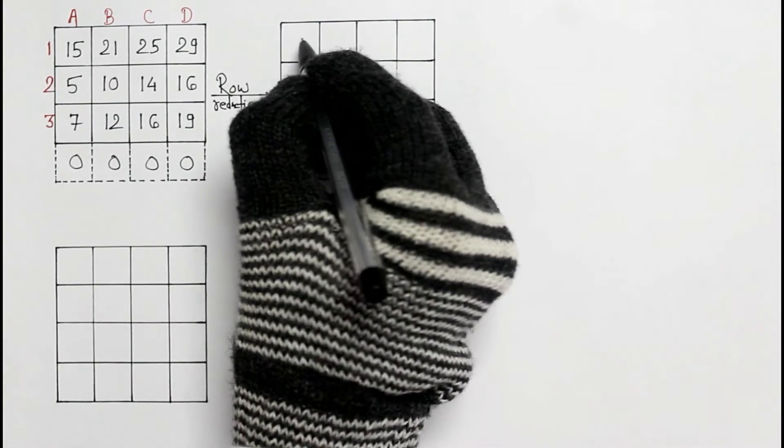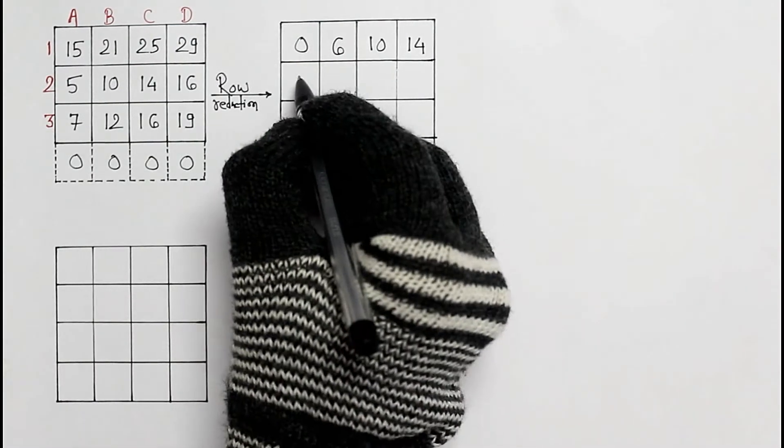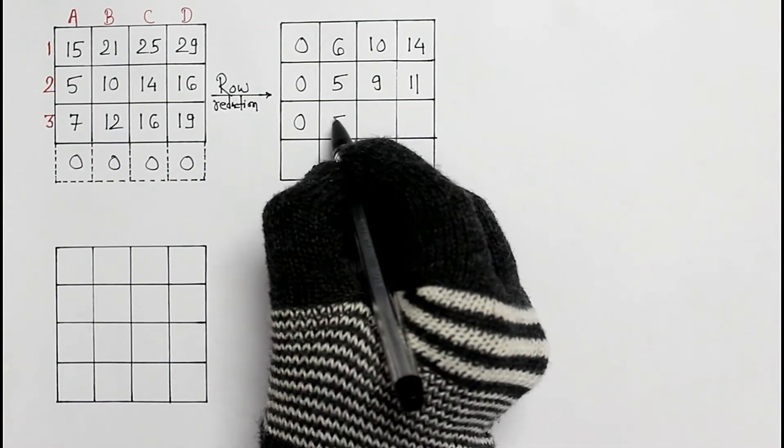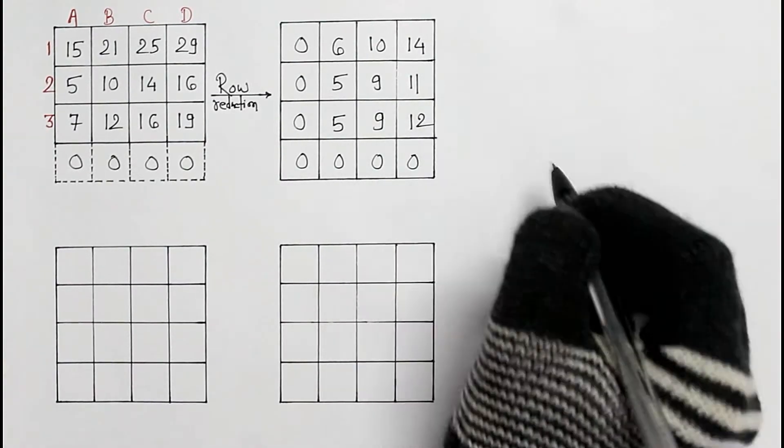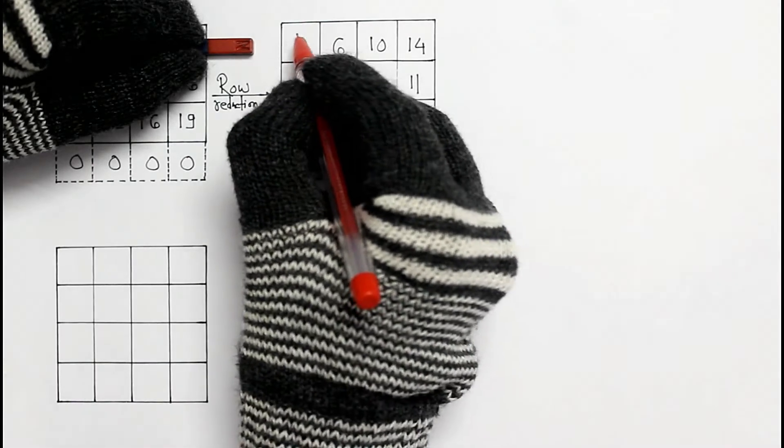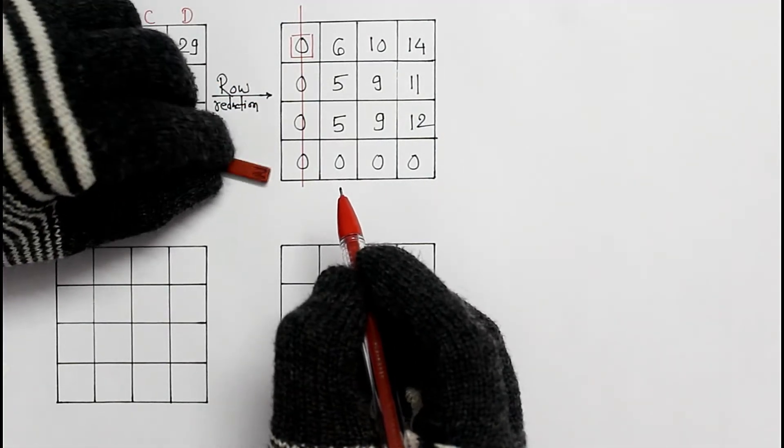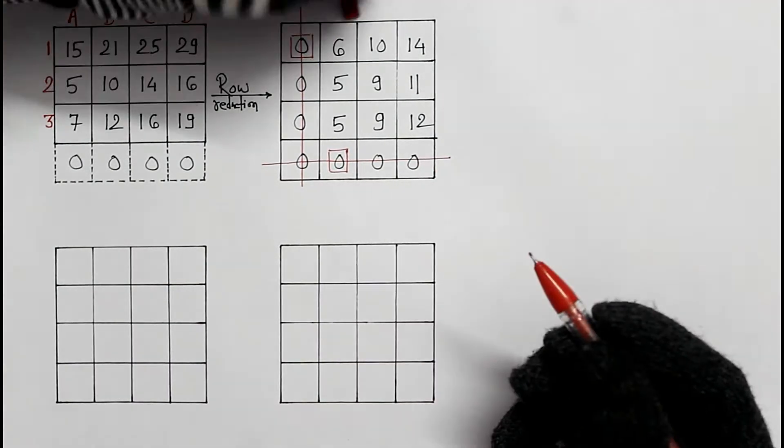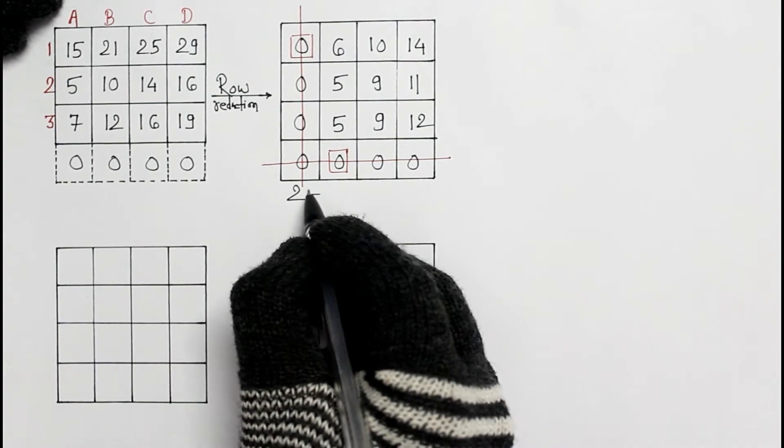In the first row, 15 is minimum. Here, 5 is minimum. And here, 7 is minimum. Column reduction is not needed here because each column has one single zero element. Total assignments are only 2, not equal to 4.